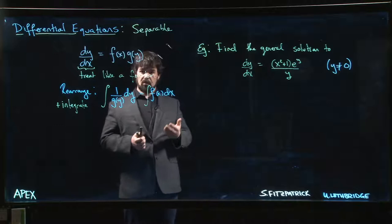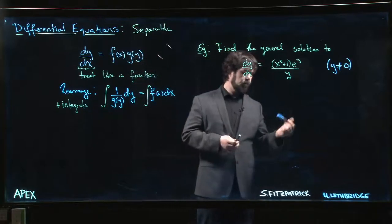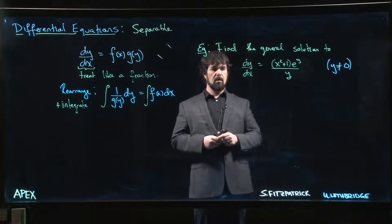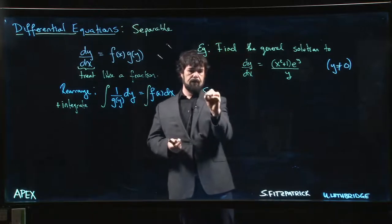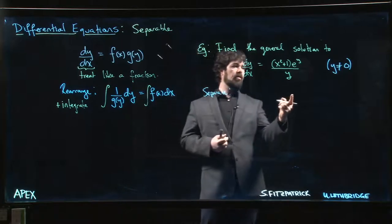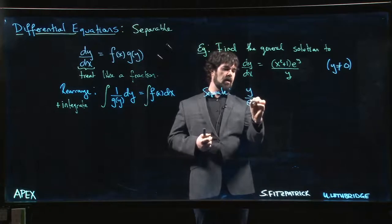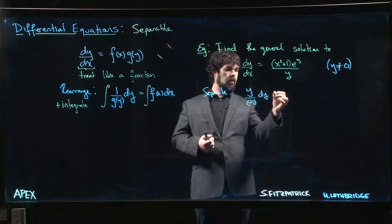If you were trying to solve this equation, you'd have to stay away from zero. Aside from that, what do we do? We separate. So let's see, we multiply both sides by y, divide by e to the y times dy.